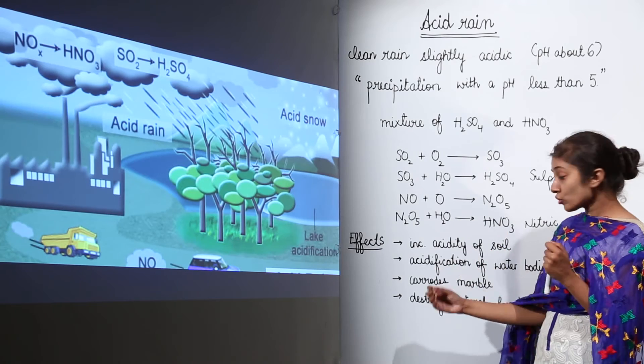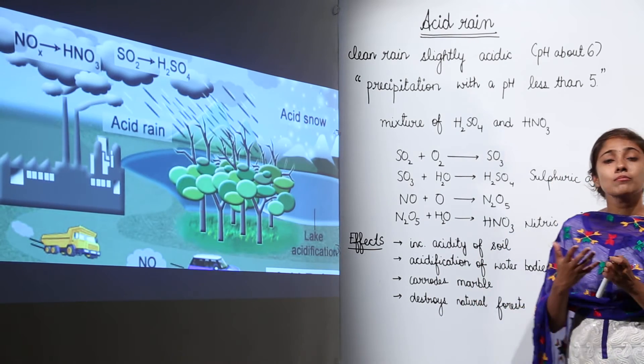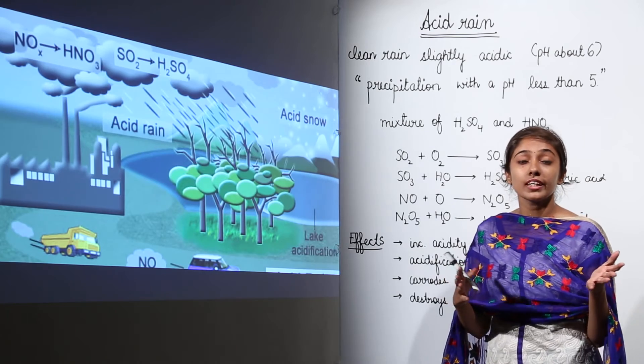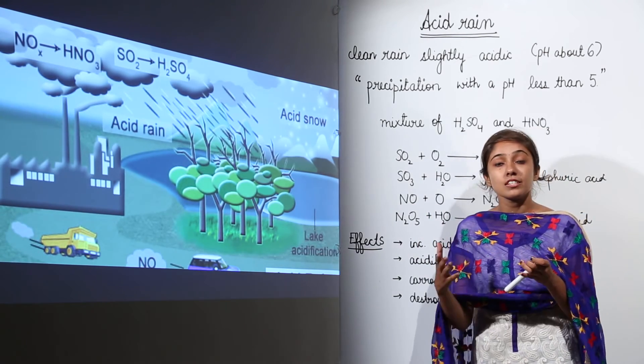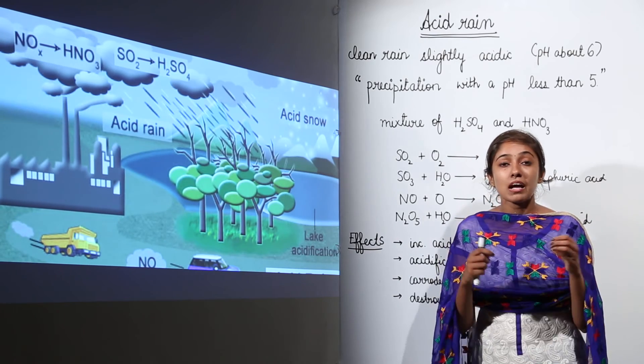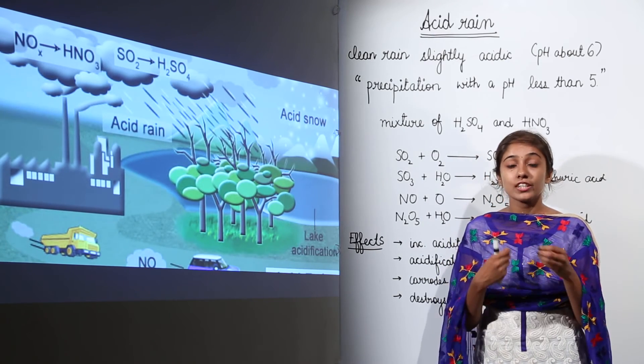Then acid rain also corrodes marble. So many monuments which are made of marble, many statues made of marble, they are getting corroded because of the acid rain. So you must have heard about Taj Mahal in Agra. The marble is turning yellowish and it is going to get corroded. Why?